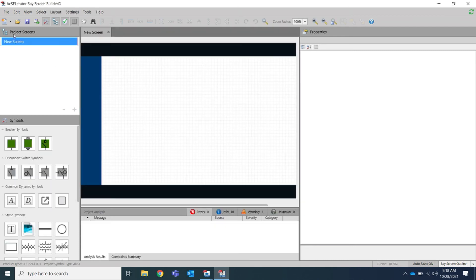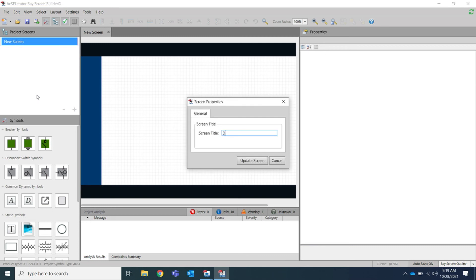Our Project Screens window contains all screens that will be displayed in the Axion Bay Controller project. Here I have a new screen which I want to rename to Demo Screen. To rename, right click and hit the Rename button. Once you've renamed your screen, hit the Update Screen button.